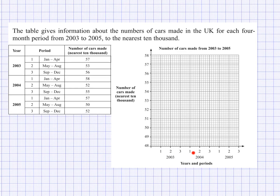In a time series graph, the time is plotted along the horizontal axis and the other values are plotted on the vertical axis. So for the first season, which was January to April, the value is 57 to the nearest 10,000. Let's plot 57 on the graph — I'll put it across there.